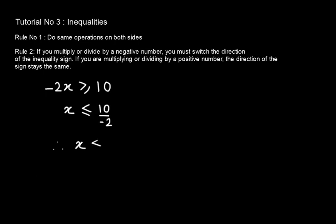So finally, we have x is less than or equal to -5, which would look on a number line as this.